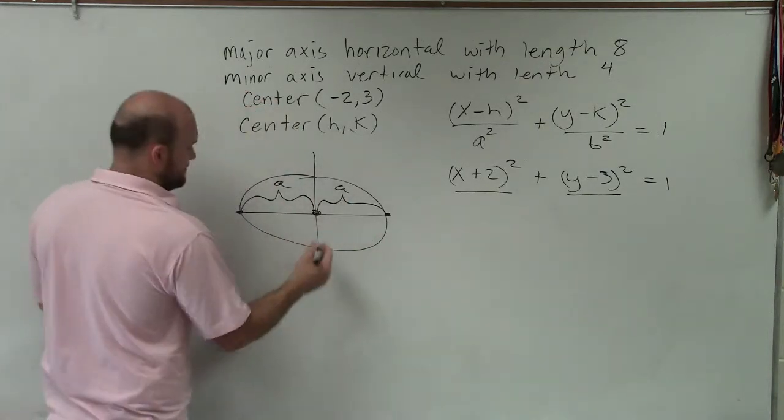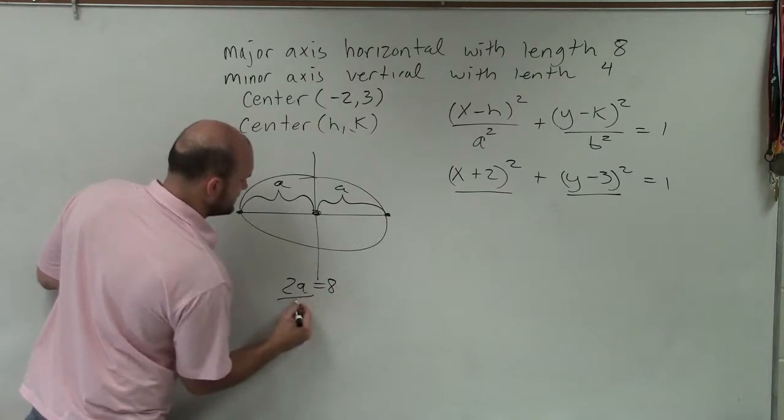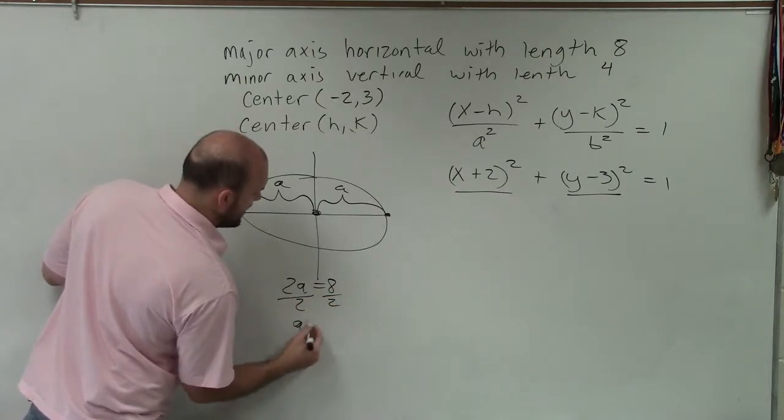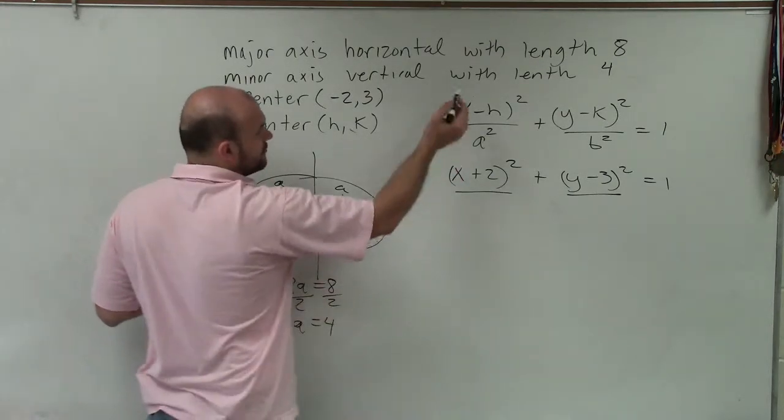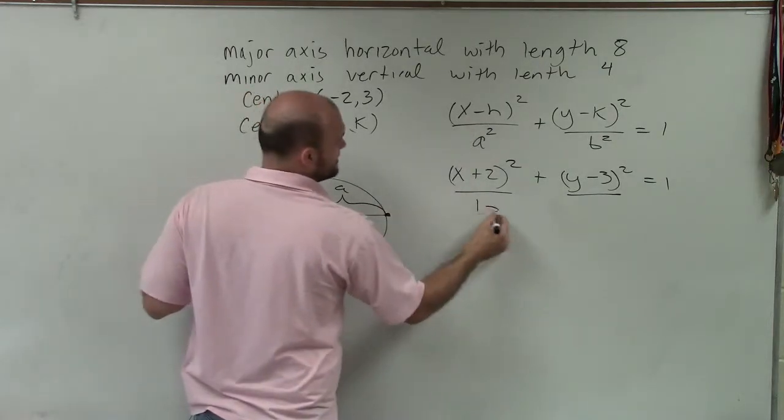So therefore, I can say 2a is equal to 8, divide by 2, divide by 2, a equals 4. Well, 4 squared is going to be 16.